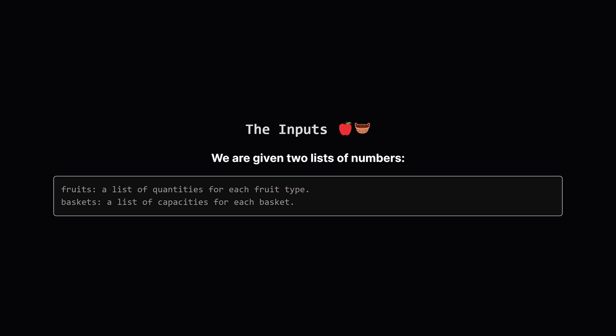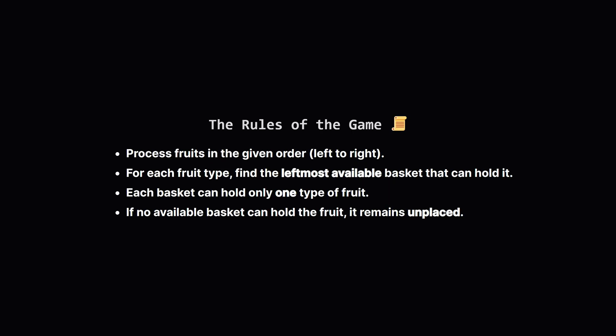We start with two lists. The first one, which we'll call Fruits, tells us how many of each fruit type we have. For example, a list like 4, 2, 5 means we have one type of fruit with a quantity of 4, a second type with a quantity of 2, and so on. The second list, Baskets, gives us the capacity of each basket. Now here are the rules: we have to go through the fruits one by one in the order they appear in the list, and for each fruit type we must find the very first basket from the left that's still empty and big enough.